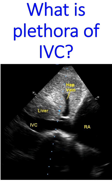IVC plethora is the lack of normal inspiratory collapse of a dilated IVC on echocardiography. Normally, the IVC diameter decreases by about 50% during inspiration — this is referred to as inspiratory collapse.